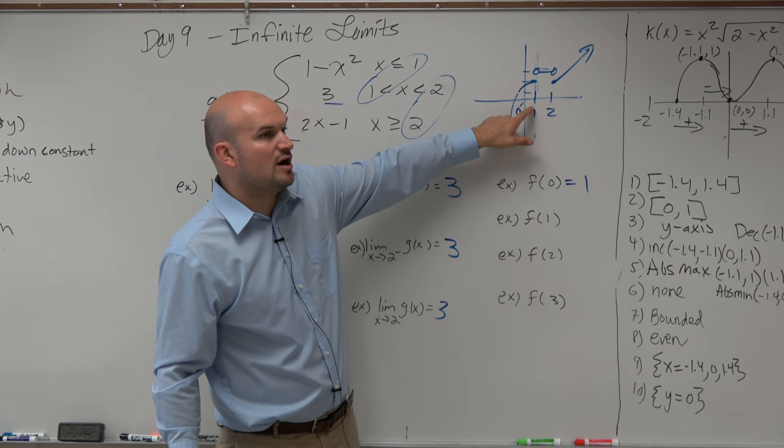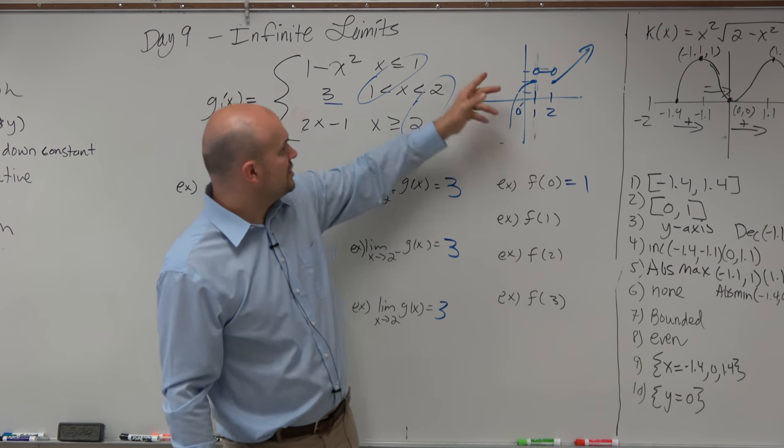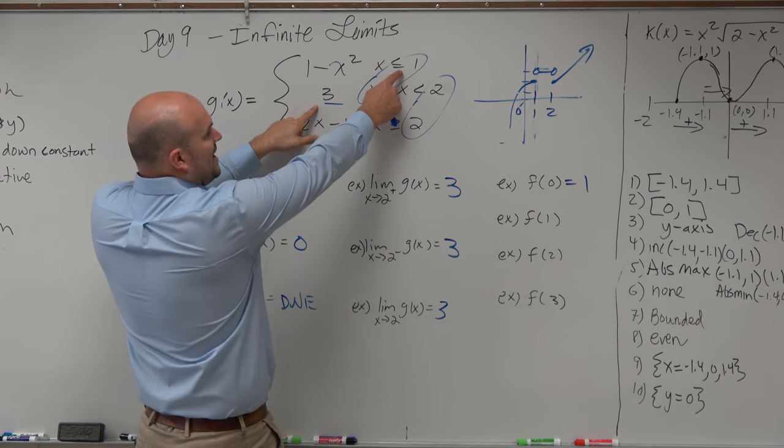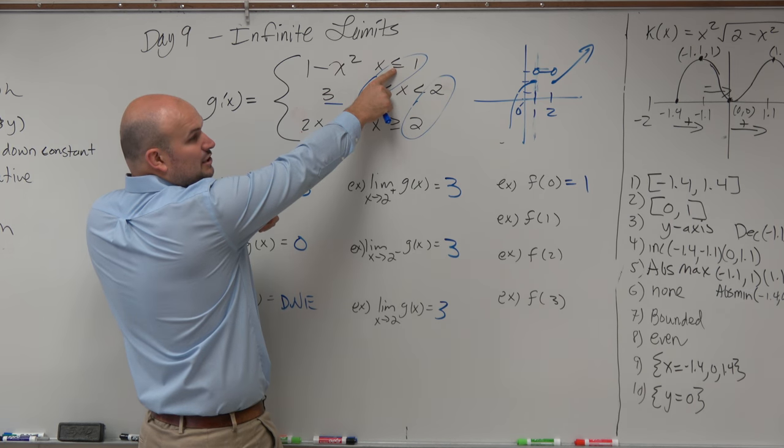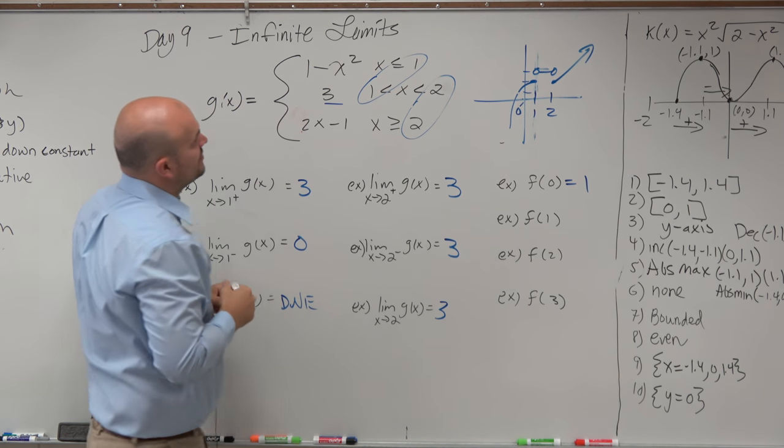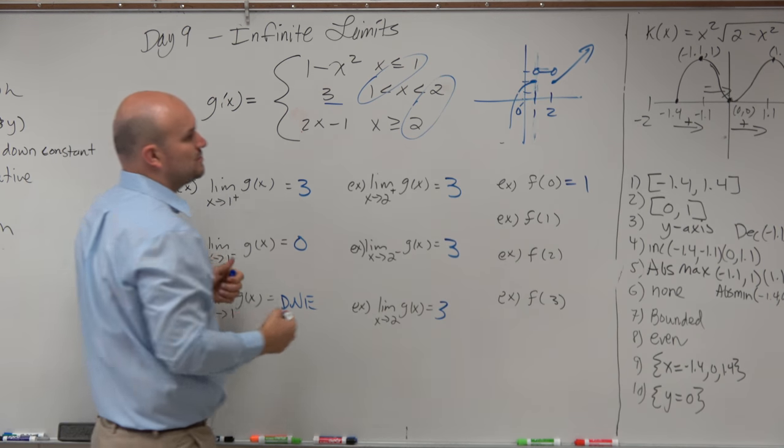At 1, we've got to figure out which function is defined. So at 1, it could either be this function or that function. It's either this one or that one. Well, that's not included. That is included. So at f of 1, you've got to plug it into this equation again, which was 1 squared is 1, 1 minus 1 is 0.